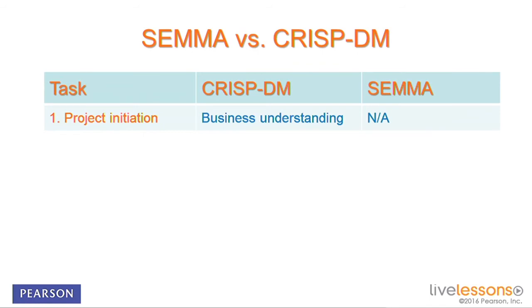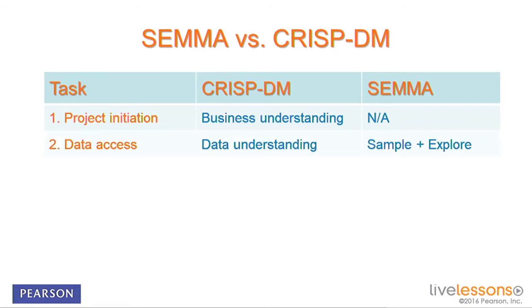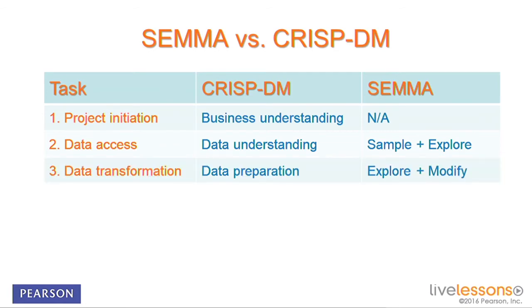Here is a point-by-point comparison between SEMA and CRISP-DM. For project initiation, CRISP-DM has a phase called business understanding, whereas SEMA has nothing because it assumes the initiation and problem definition are already completed. For data access, CRISP-DM calls it data understanding, while SEMA skips much of the understanding and acquisition and jumps right into sampling, exploring, and validating the data. For data transformation, CRISP-DM calls it data preparation, while SEMA calls it explore and modify, where anomalies are observed, identified, and fixed before the modeling phase.